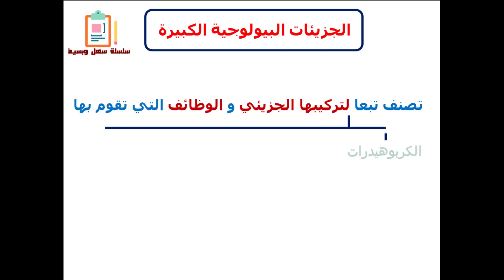الجزيئات البيولوجية الكبيرة تنقسم إلى أربع أصناف: واحد الكربوهيدرات، اتنين الليبيدات، تلاتة البروتينات، أربعة الأحماض النووية. هندرس في الحلقة دي الكربوهيدرات.